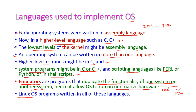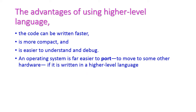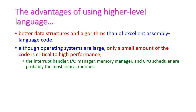The Unix operating system is written using C, C++, and scripting languages. The advantages of using high-level languages are that we can write code faster, more compactly, and it is easier to understand and debug. Anyone can easily understand and debug the operating system during development, and it is easier to port — meaning we can easily move it from one system to another. High-level languages also offer better data structures and algorithms.